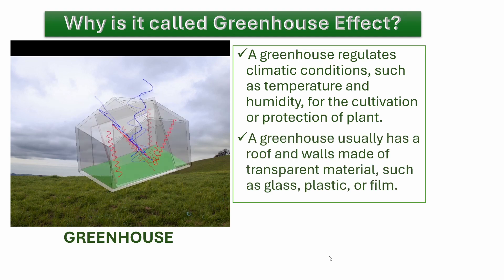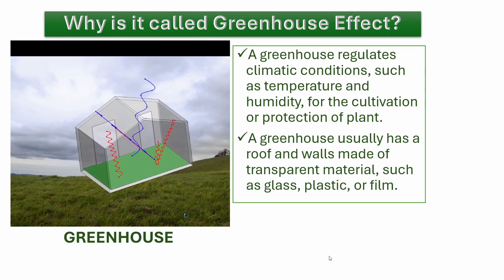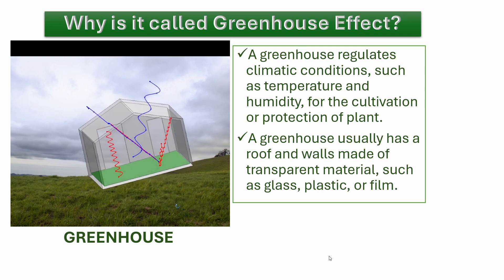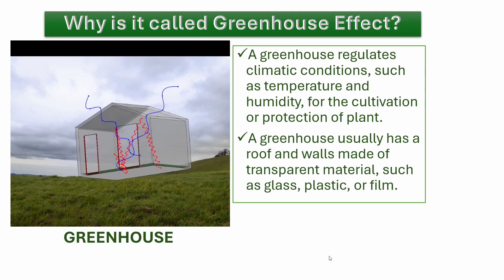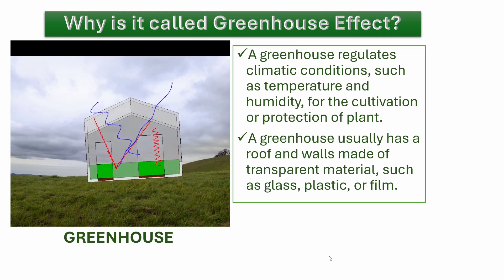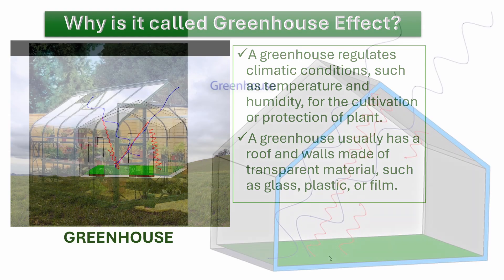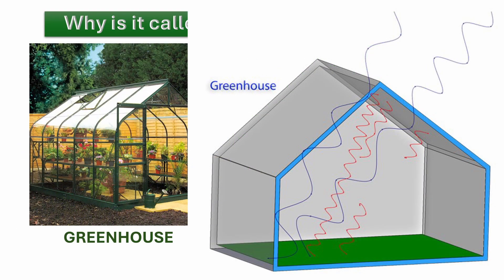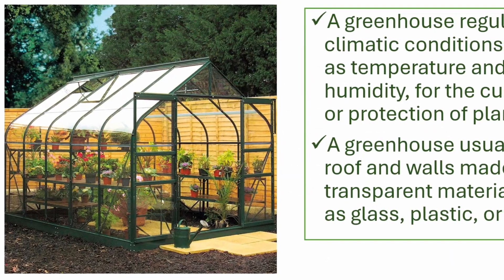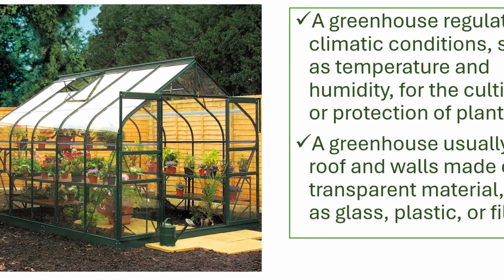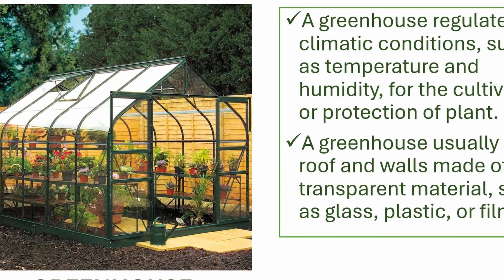The enclosure of a greenhouse allows visible light to enter and be absorbed by the plants and soil. The plants and soil then emit the absorbed heat energy as infrared radiation. The greenhouse then absorbs that infrared radiation, emitting some of it back into the greenhouse and thus keeping the greenhouse warm even when the temperature outside is lower.